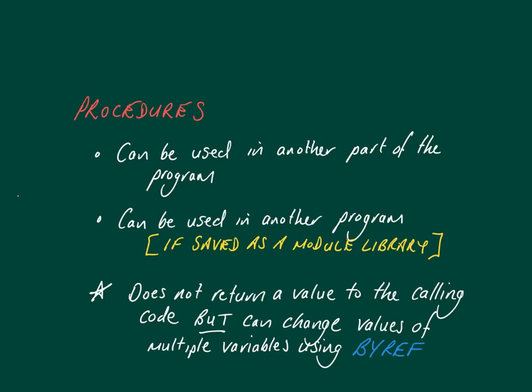Let's compare this with procedures. Procedures can also be used in another part of the program - it's just another way of modularizing your code, reducing the overall size of the code to make your program more efficient. Like a function, a procedure can be used in another program, but only if it's saved as a module library. The difference is that a procedure does not return a value to the calling code. But you can change values of multiple variables if you use the keyword 'by ref' when dealing with your actual parameters, as you'll see later in this video.